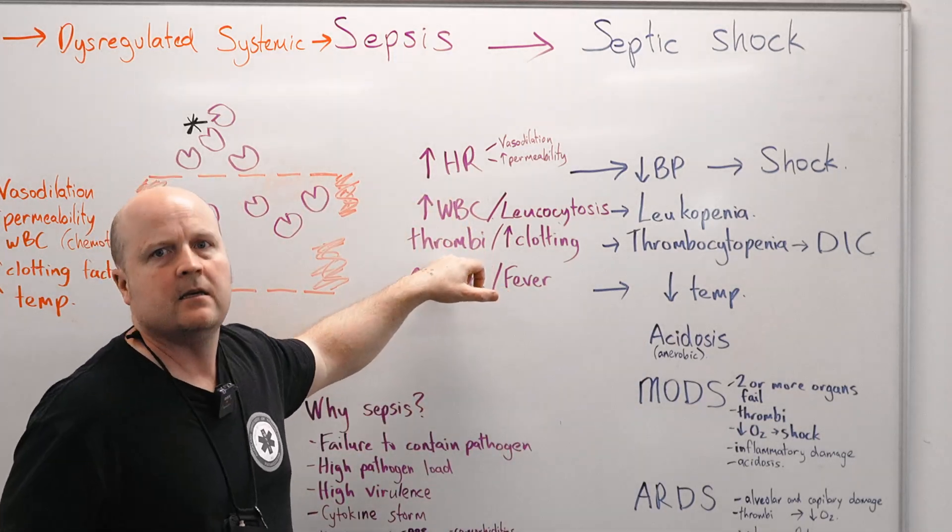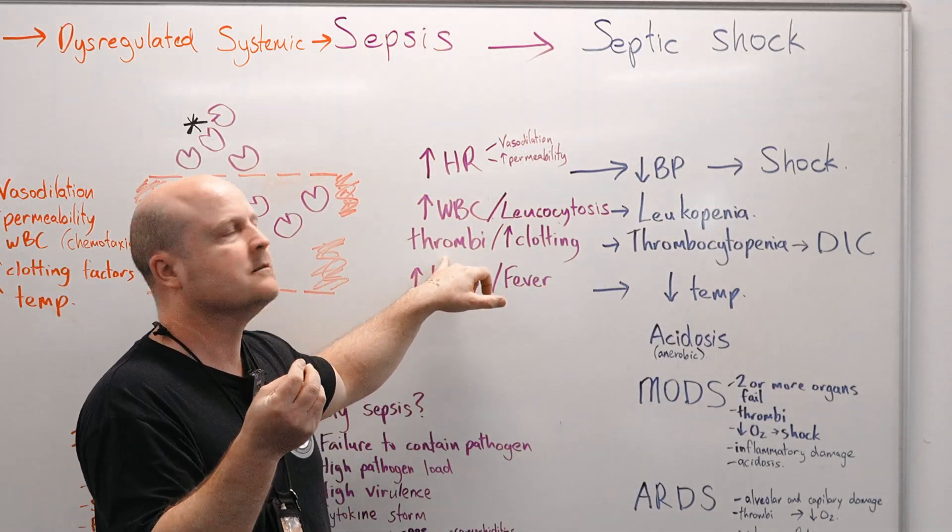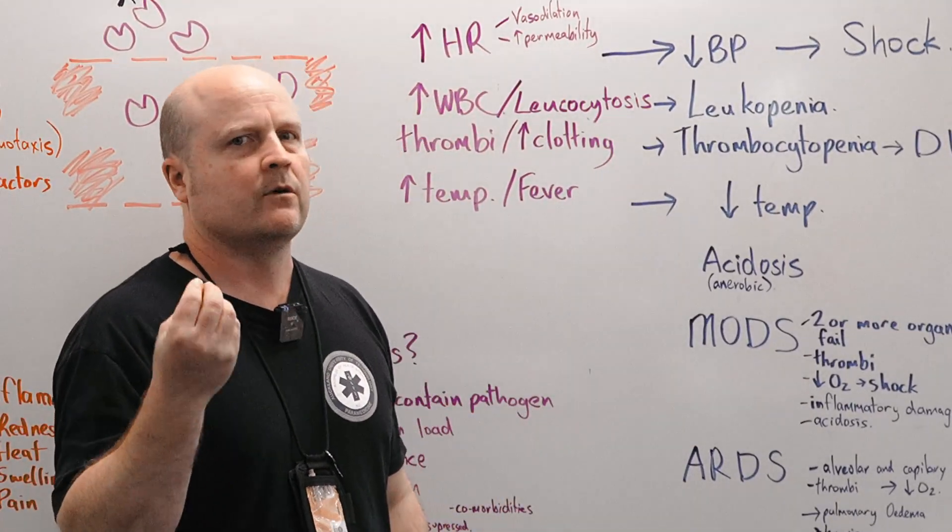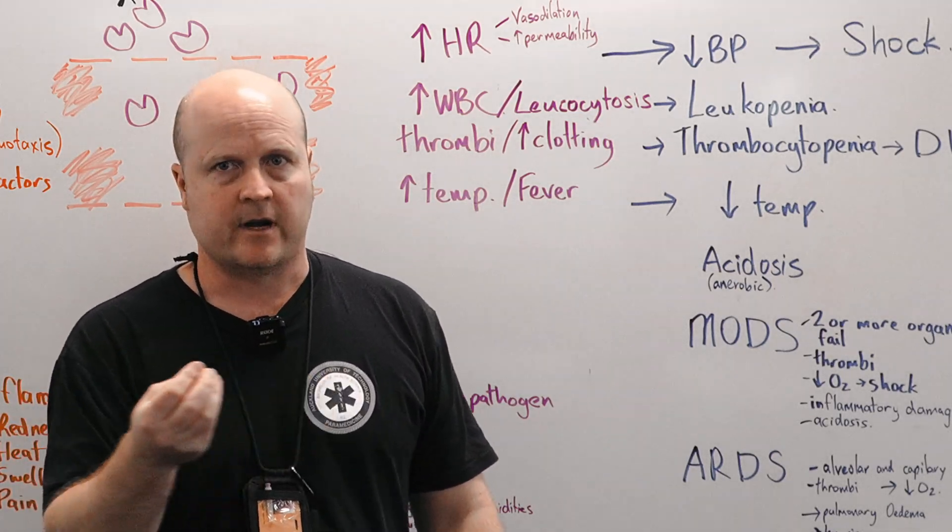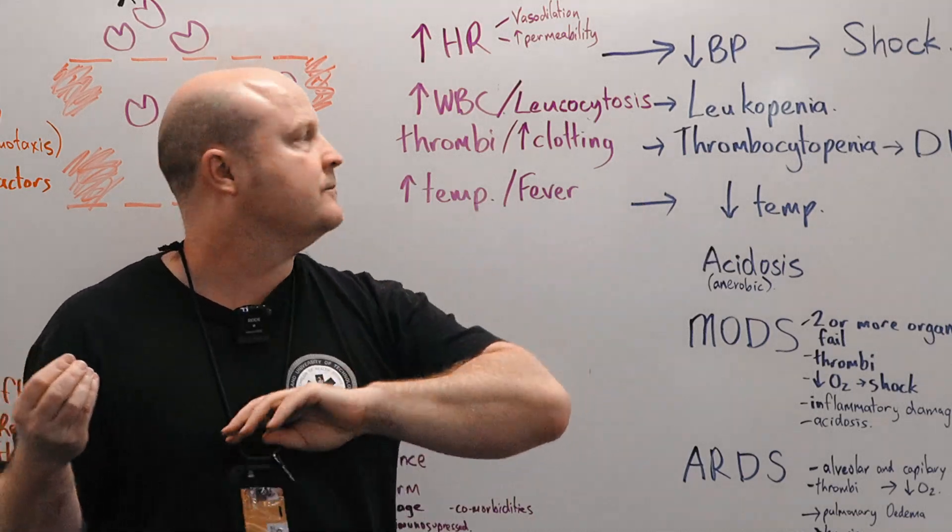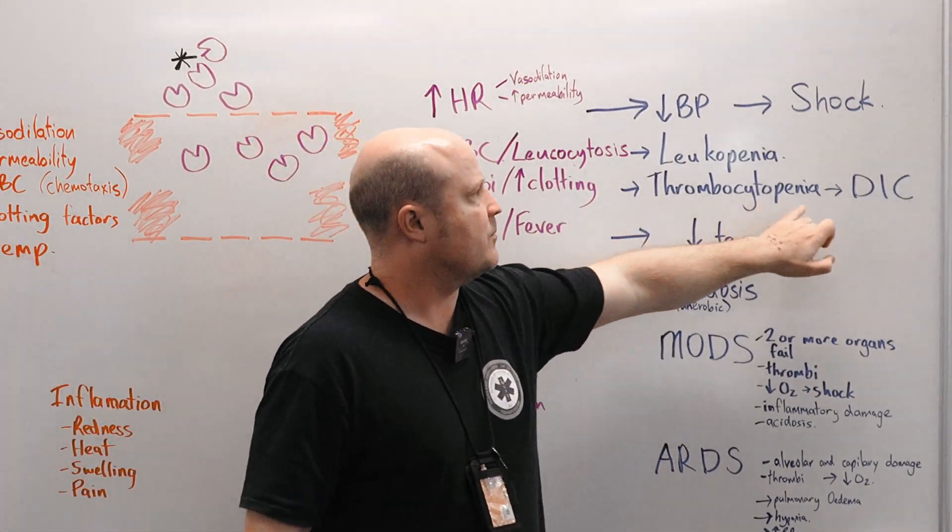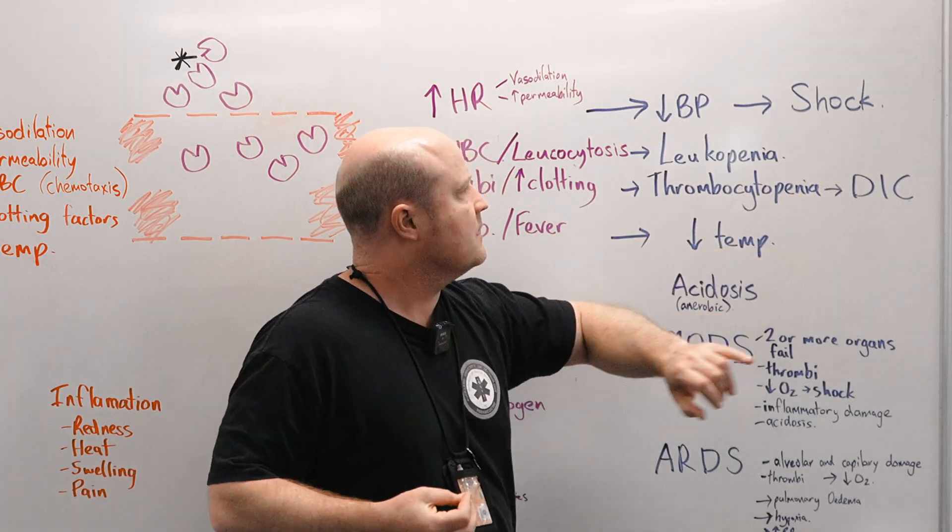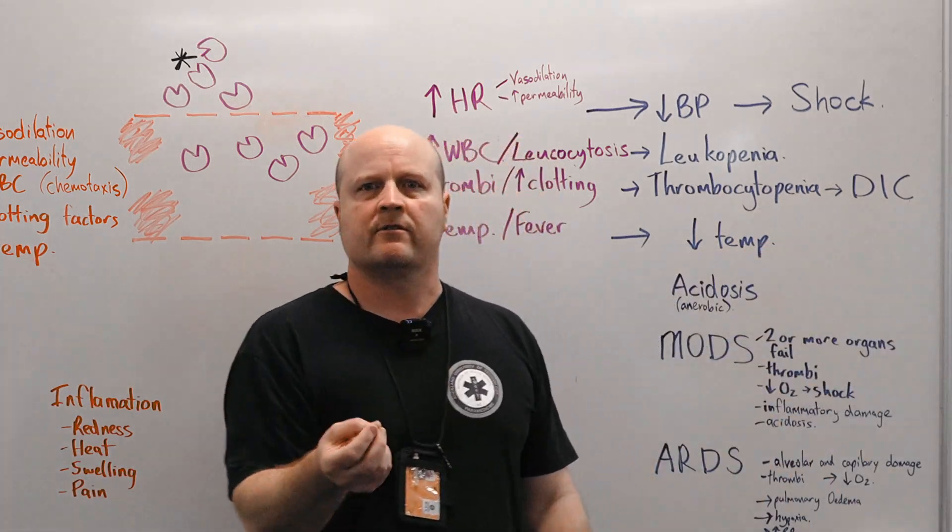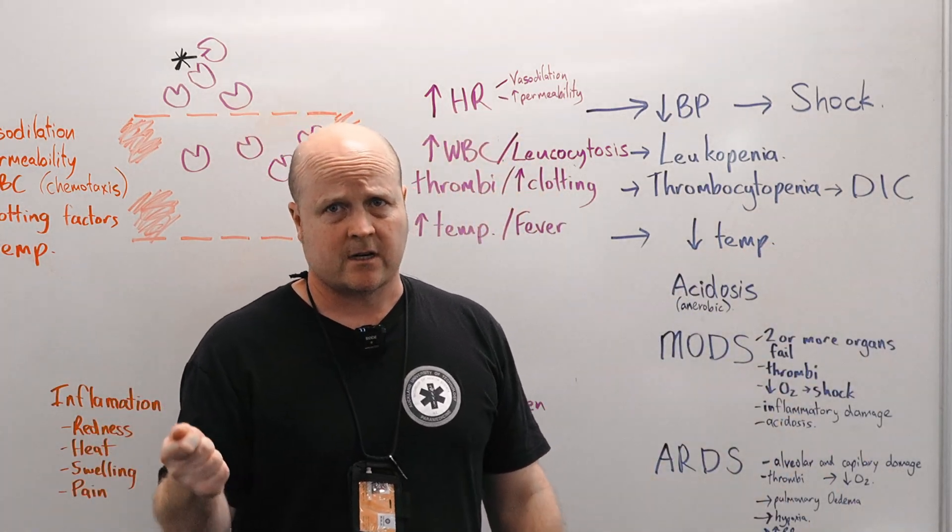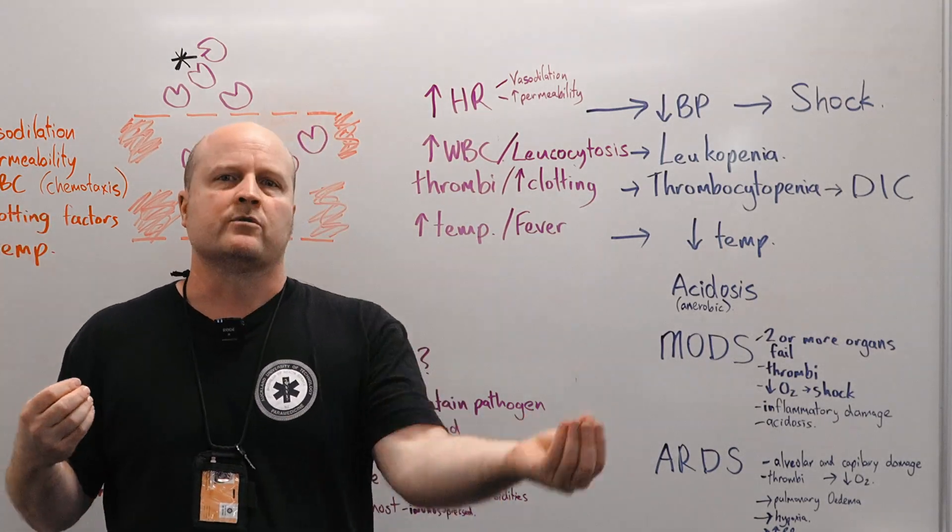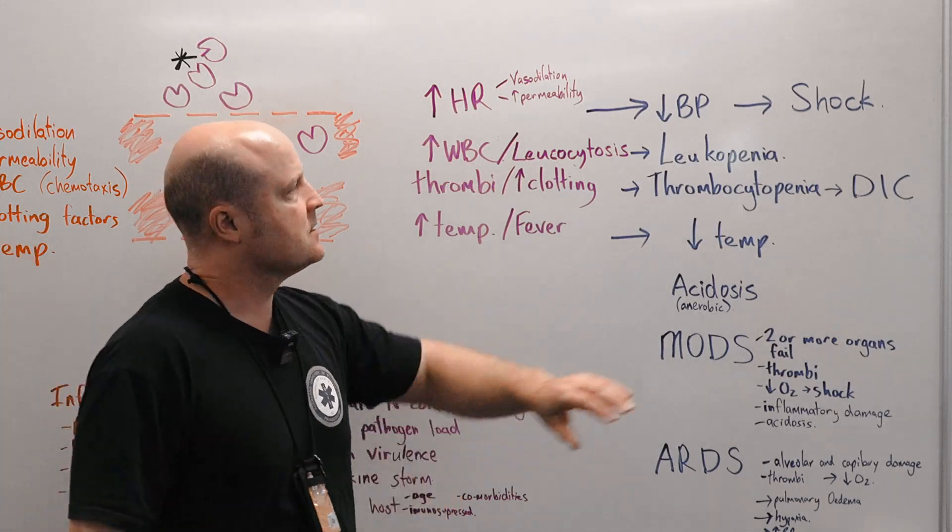Then remember initially we had more clots forming, but as we do this, we run out of clotting factors. So eventually we're going to have clots that are in our body, but without clotting factors, now we're going to get bleeding as well. So thrombocytopenia, we run out of clotting factors. And DIC is diffuse intravascular coagulation. So this is the unfortunate consequence of having clots in our body and also bleeding. So this is a very late stage.